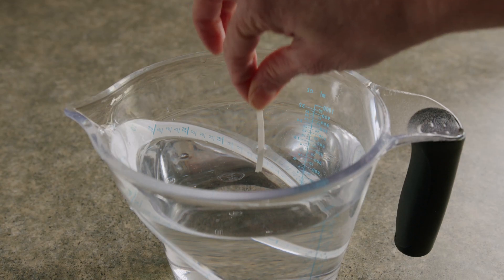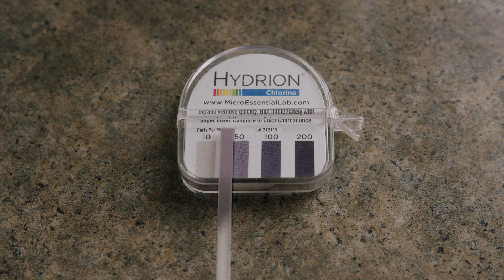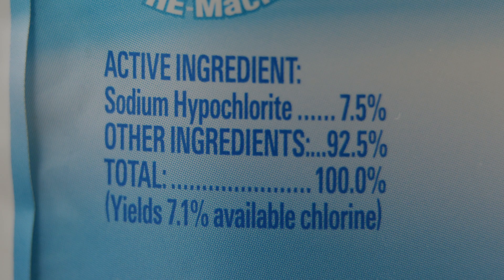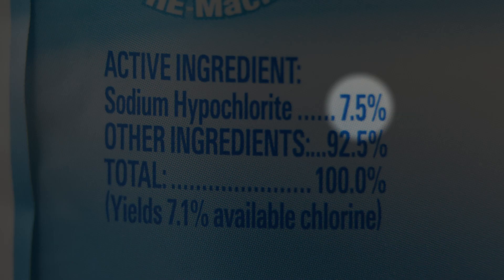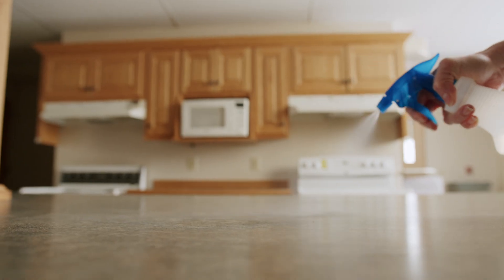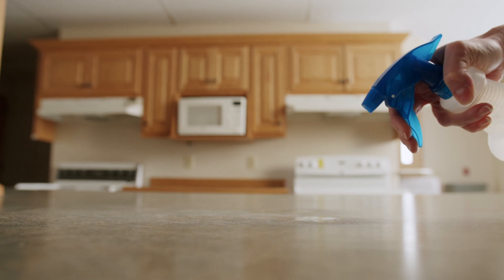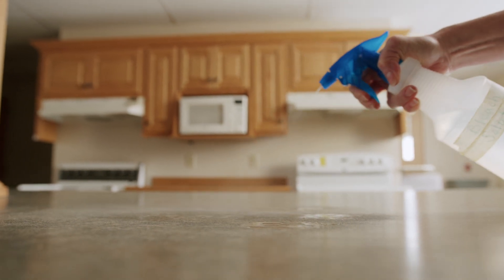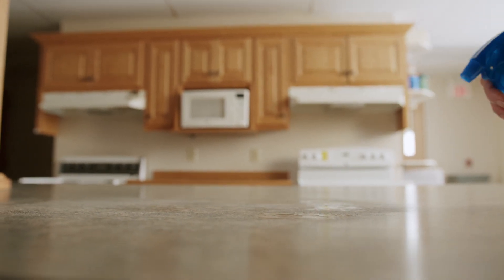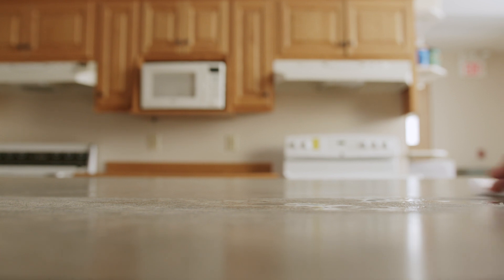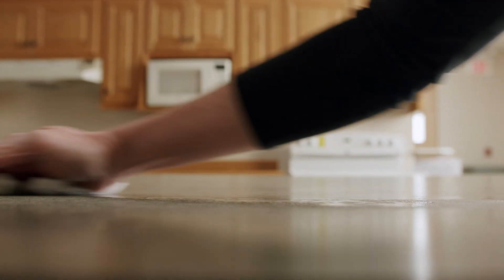Ideally, a bleach solution should be 50 to 100 parts per million for a food contact surface. Most bleach products are found to be 7.25 to 8.25% sodium hypochlorite, and the correct formula would be one teaspoon of bleach per gallon of water. Note, this is not much — the solution should not have a strong bleach odor.